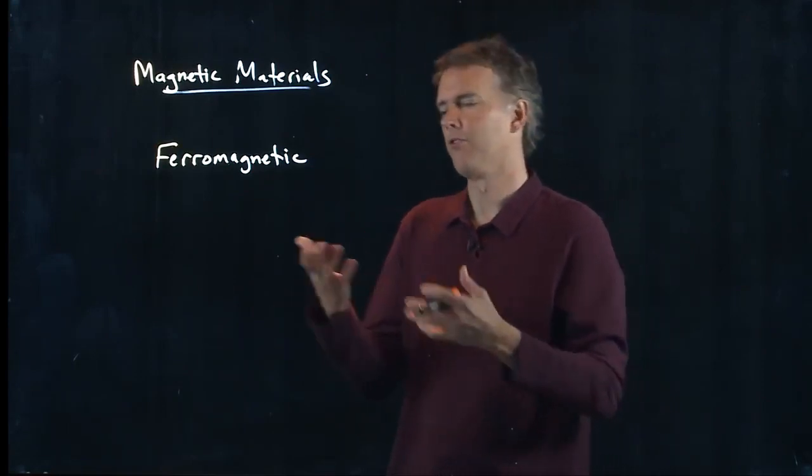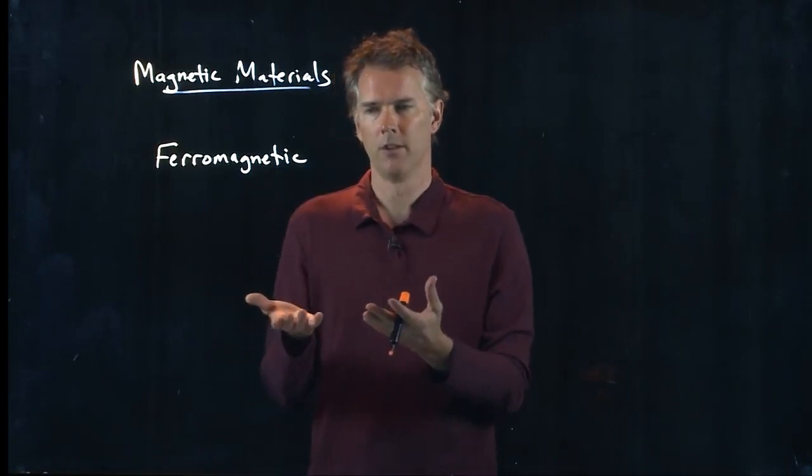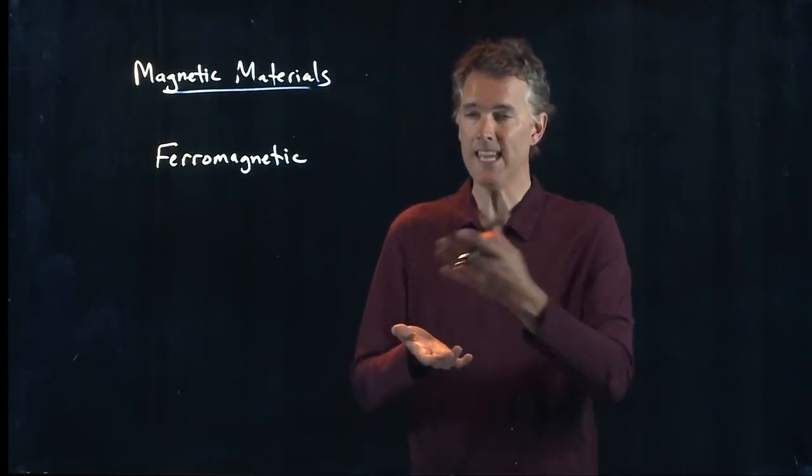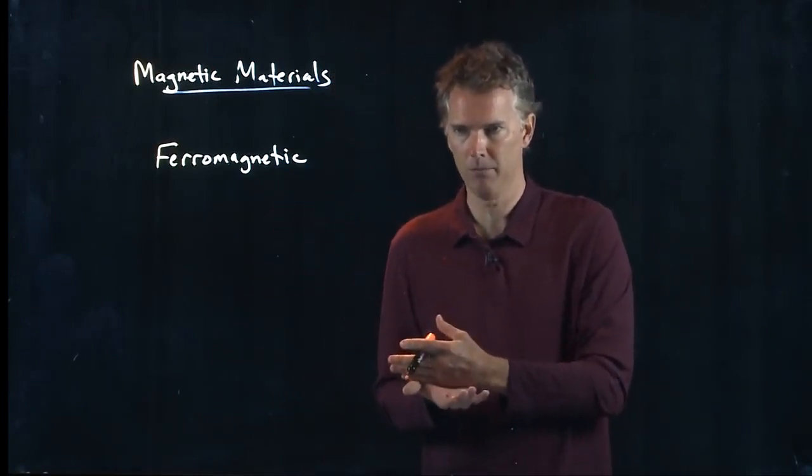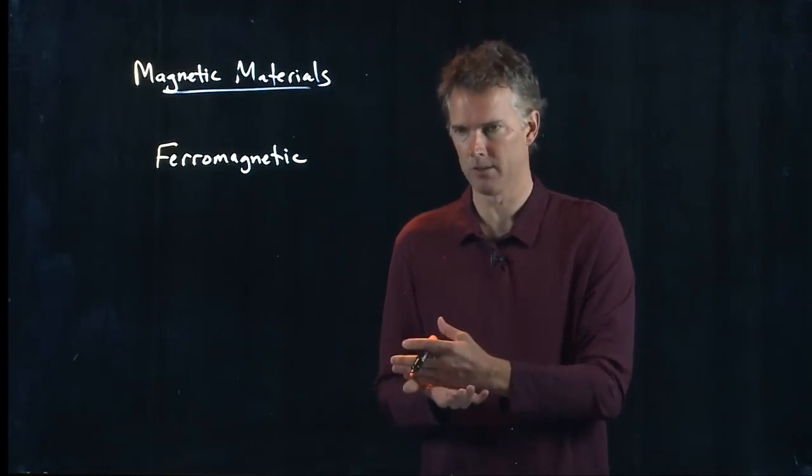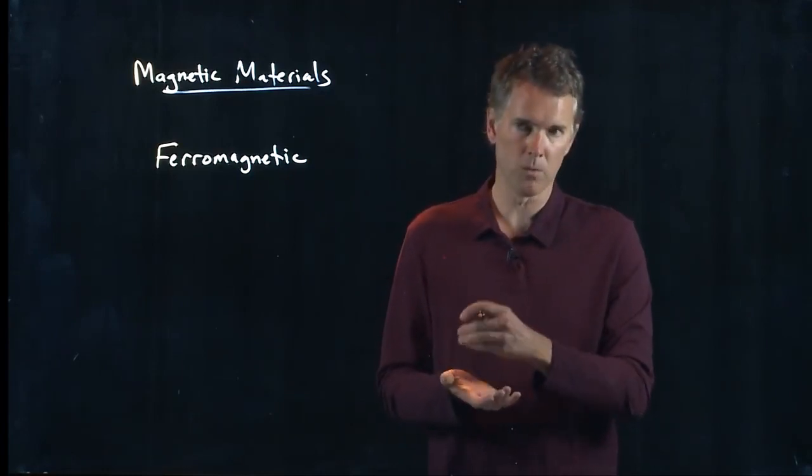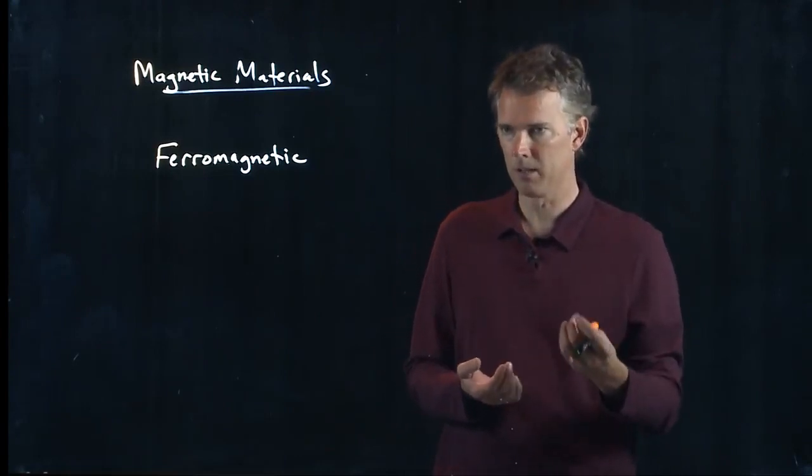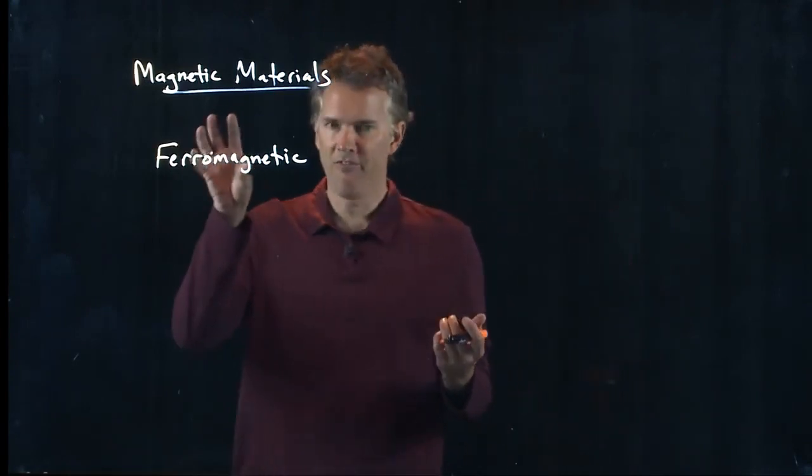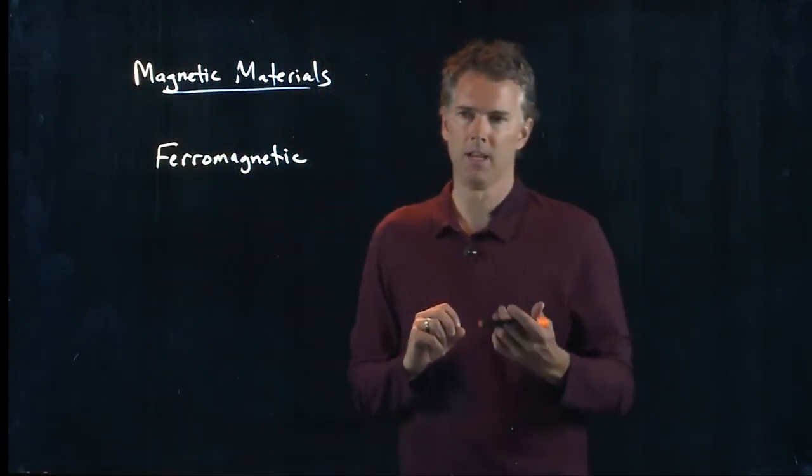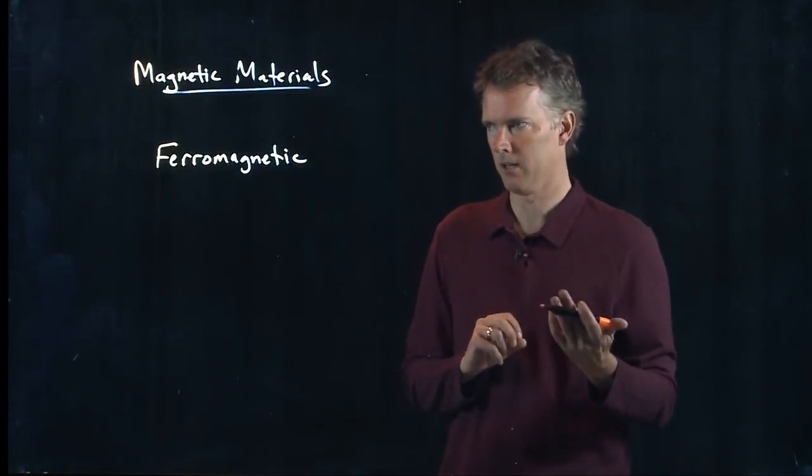And so there's two classes of material: those with even numbers of protons and electrons, and those are diamagnetic. And the ones with odd numbers are typically paramagnetic. But ferromagnetic is something entirely different.